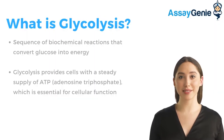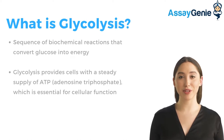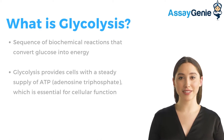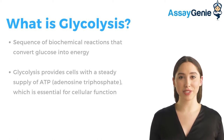The glycolysis pathway is a sequence of biochemical reactions that convert glucose into energy. The main purpose of glycolysis is to provide the cells with a steady supply of ATP, which is essential for cellular function.